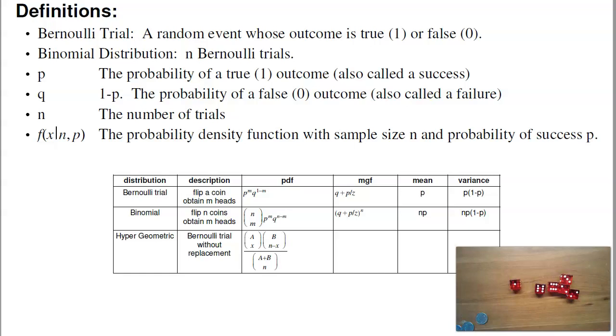A couple definitions. P is the probability of success. A coin would be 50-50, rolling a 1 would be 1 in 6. Q is 1 minus P. All probabilities have to add to 1, so that's why Q has to be 1 minus P. n is the number of trials. And f(x) is the probability density function. It's a way to describe a random event. This table we'll talk about a little bit later.